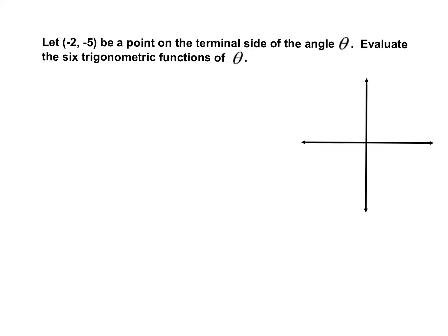Let's try one more example. Let negative 2, negative 5 be a point on the terminal side of the angle. We start at the initial position and go all the way to negative 2, negative 5 — x is negative 2, y is negative 5. We plot to this point, which is our terminal angle. We're always going to draw a triangle with this angle. We've plotted negative 2, negative 5 and drawn our terminal side, and now we draw our right triangle.